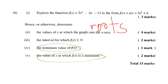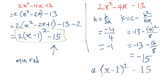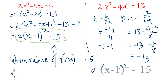Let's do the last part of the question: find the minimum value of f(x) and the value of x at which the minimum occurs. Looking at our completed square form, the minimum value is the k value, so the minimum value of f(x) is -15. The value of x where this occurs is when x - 1 = 0, so x = 1, since h is negative 1.